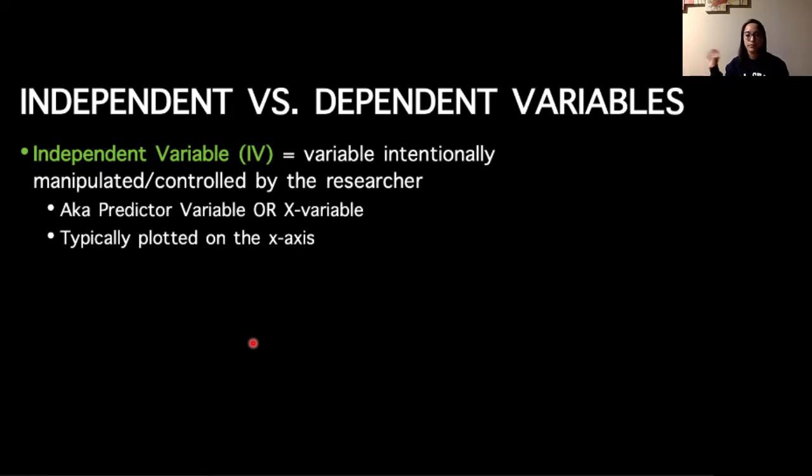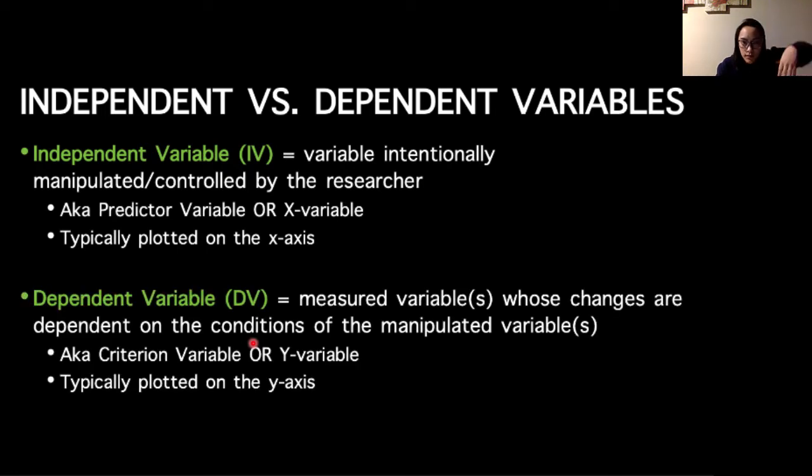If we had a control group versus an experimental group and wanted to see the effects of a diet program on weight loss—I actually think I used that example later in this lecture—the categories we have, control group and experimental group, would go on the X axis. On the Y axis, we would compare how much weight loss actually occurred. The Y variable is our measured variable, also known as the dependent variable. The measurements we collect are direct changes or outcomes as a result of the conditions we've manipulated with the independent variable.